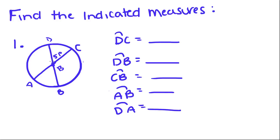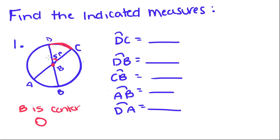So now we're going to find the indicated measures. They want the measure of arc DC. Since we know that B is the center of the circle, angle DBC is a central angle. So that means this arc is equal to the measure of the central angle — arc DC is equal to 51 degrees.